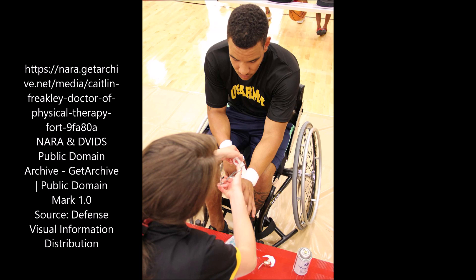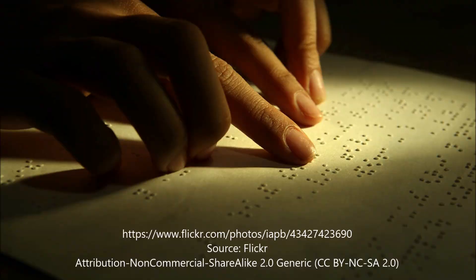Emma's interview about her visual impairment is really interesting in explaining how she leads an independent, good life. She speaks about white canes, which are the symbol of this disability and how those are used. She also presents guide dogs, the Braille alphabet, and different accessibility technologies.